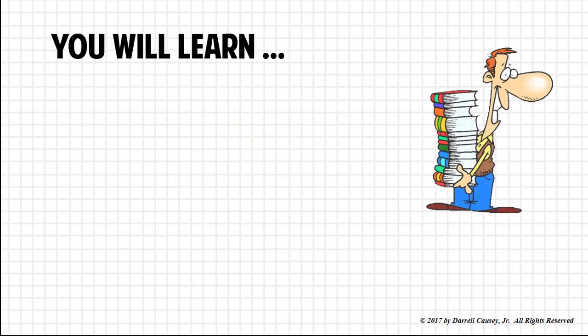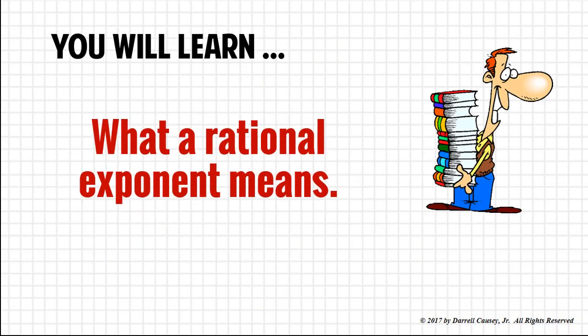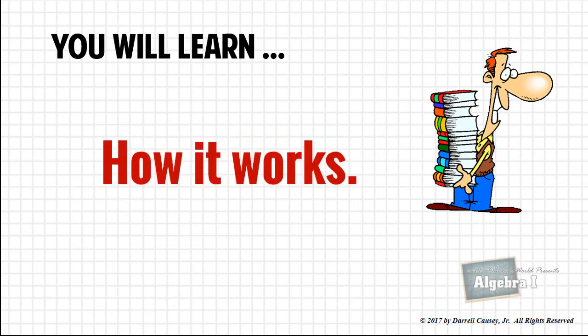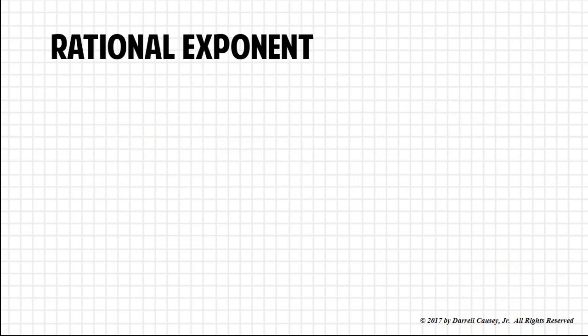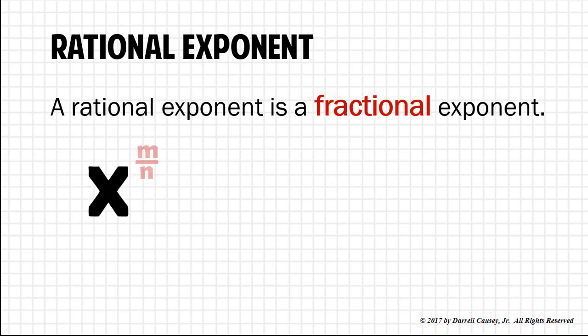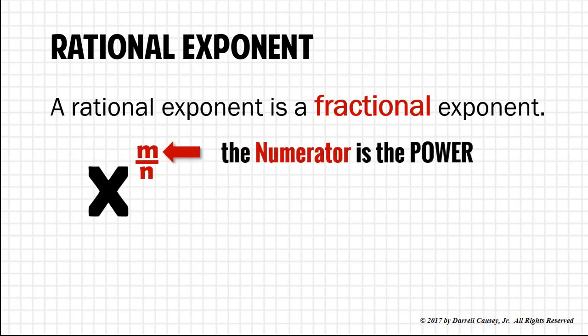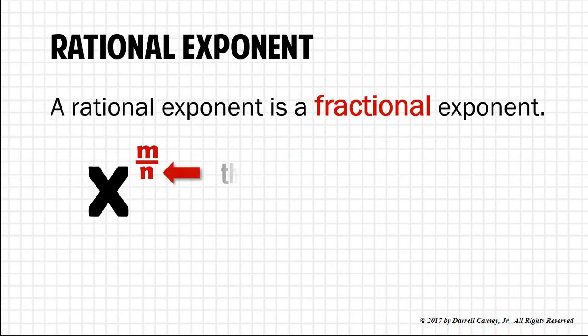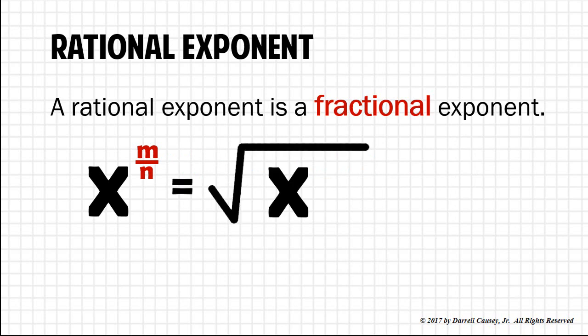You will learn in this video what a rational exponent means and how it works. A rational exponent is a fractional exponent where the numerator is the power and the denominator is the index. We would write it as a radical with m as the power and n as the root or index.